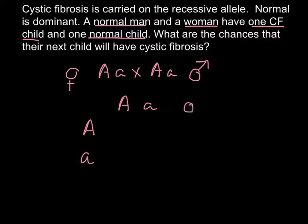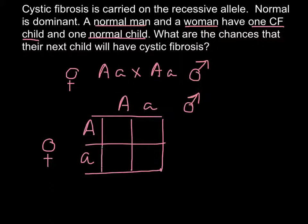One side would be for male, another side for the female. And now we can find all possible genotypes. Capital A, capital A here. Capital A, small a here. Small a, capital A here. And small a, small a here.